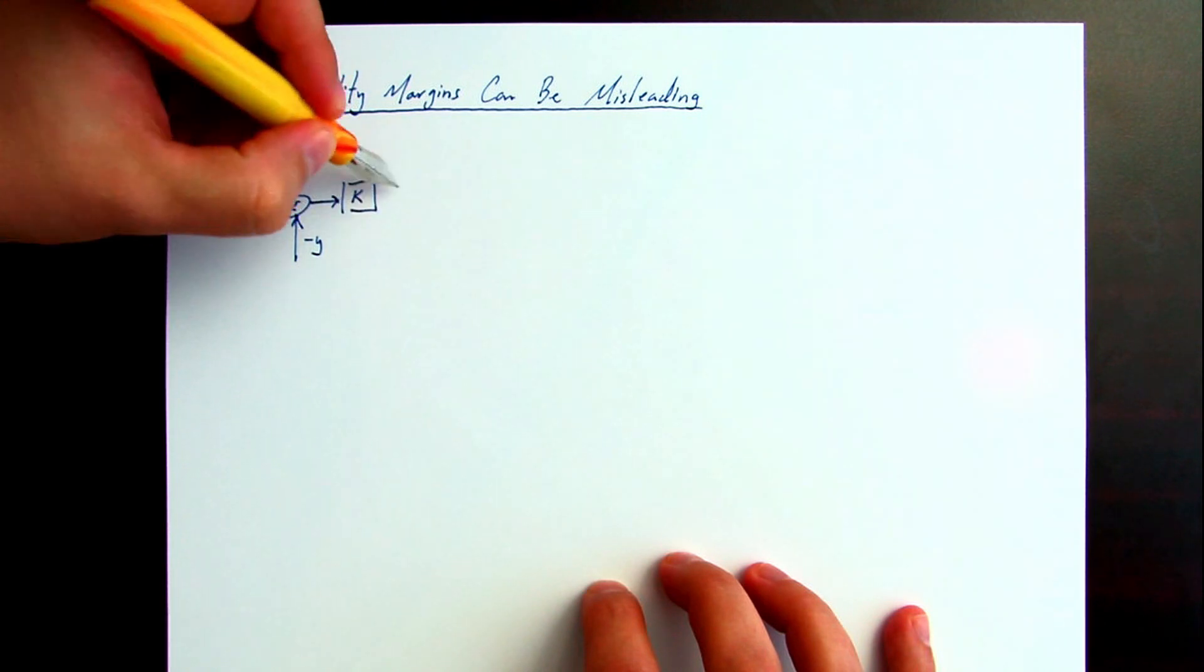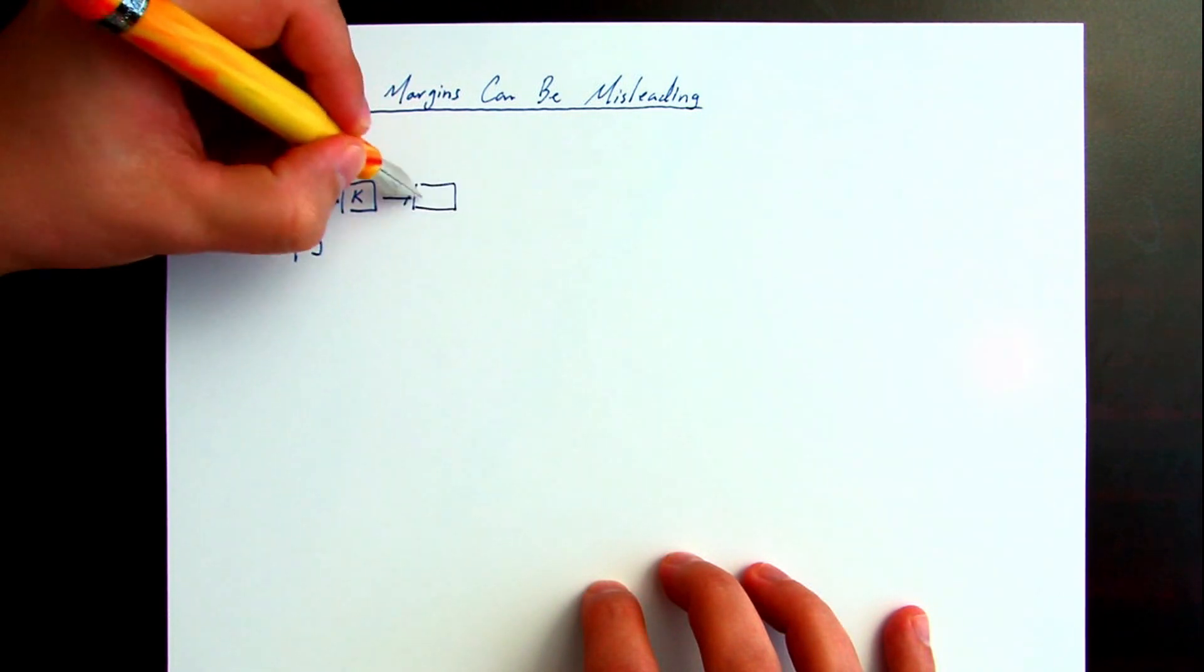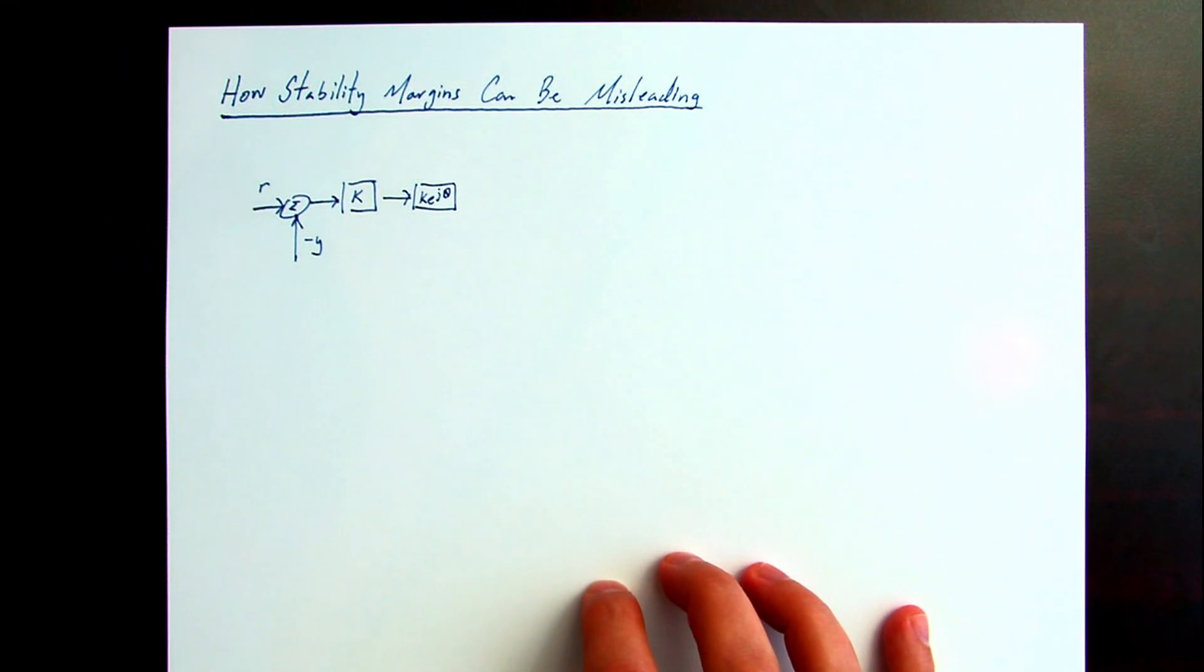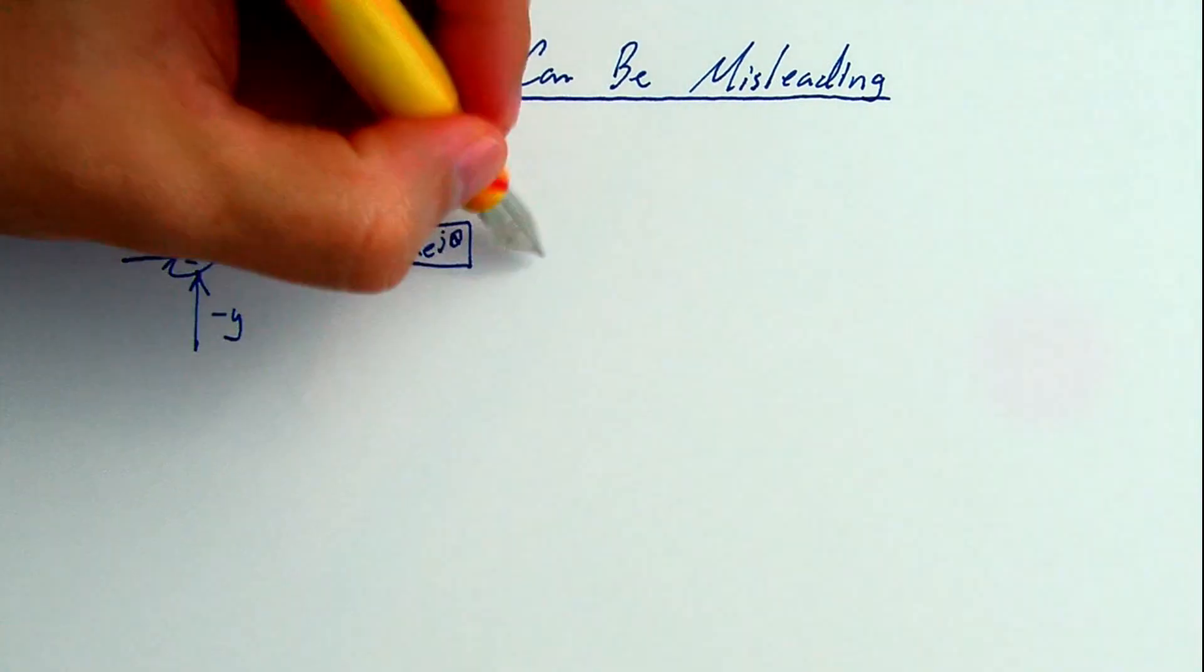Our feedback loop: controller k, our disturbance model in between the controller and the plant.